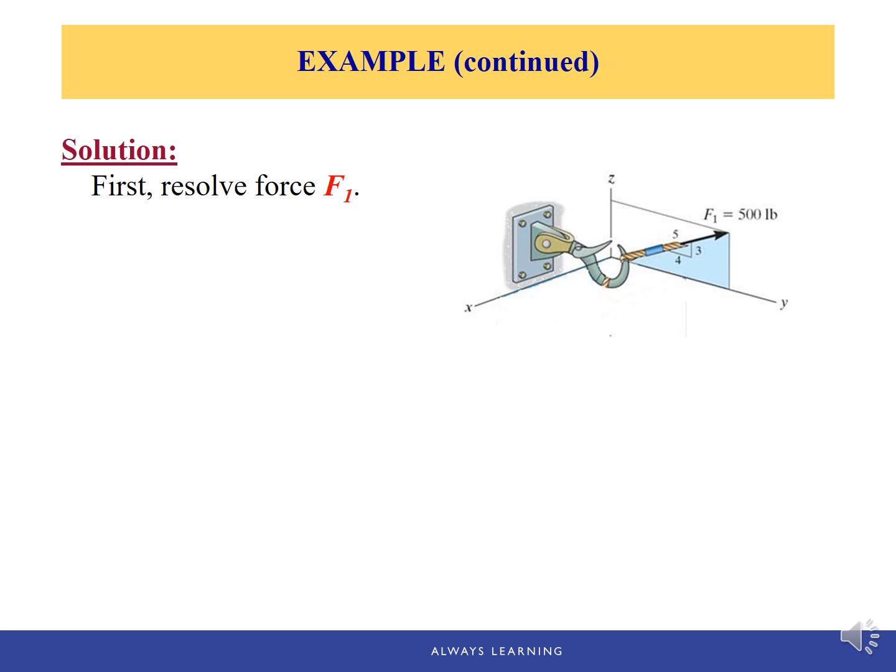First, let's resolve force F1. The imaginary path method also works here for 3D vectors. First, let's locate the head and the tail — the tail is the starting point of the force vector, and the head is the endpoint. We're going to travel from the tail to the head only along three directions: x, y, and z.